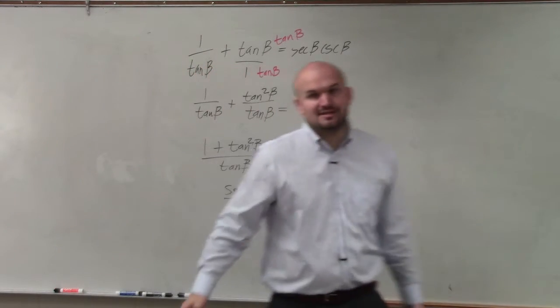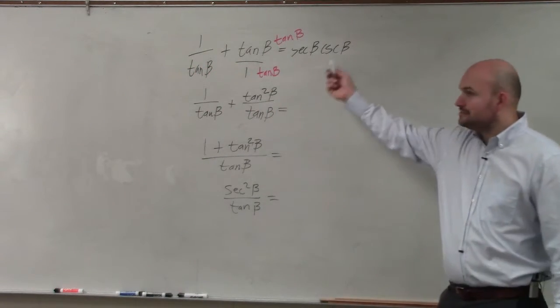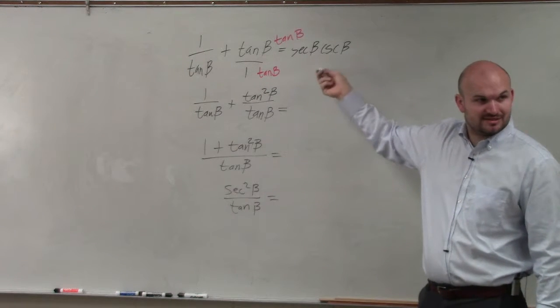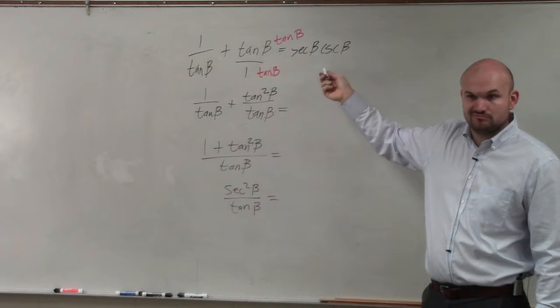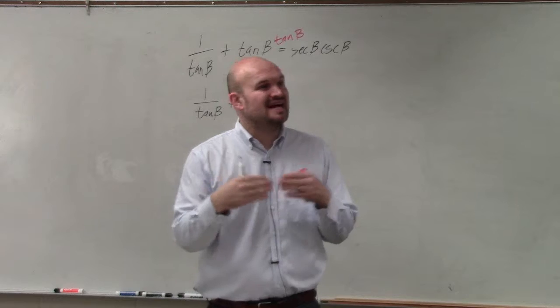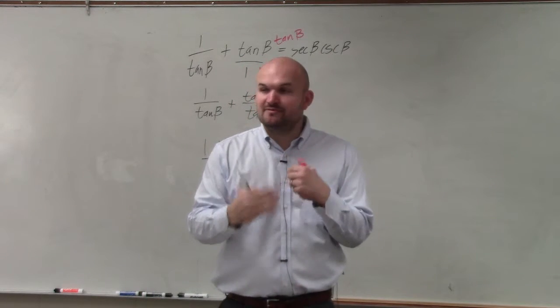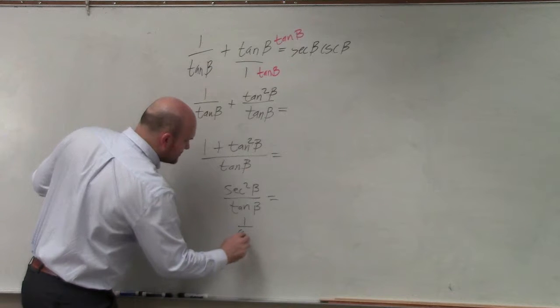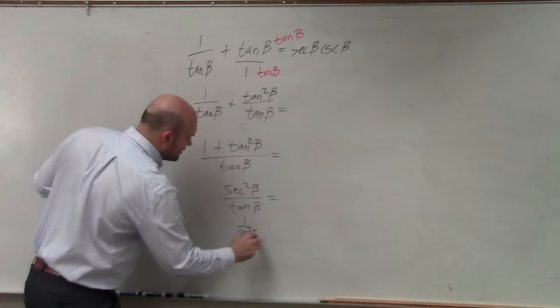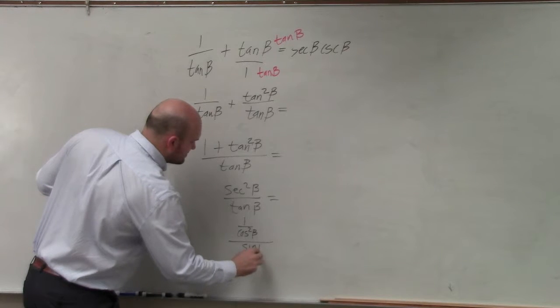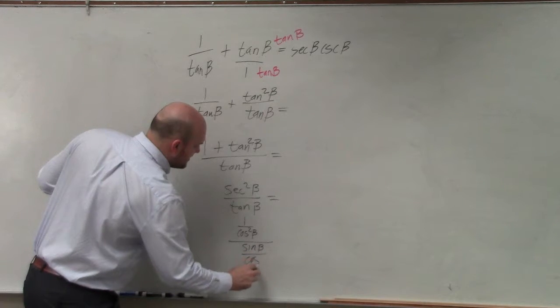Now, do we have this? No. So what might be helpful is to maybe rewrite this in terms of sines and cosines so I can maybe further simplify this. So secant squared is 1 over cosine squared, divided by sine of beta over cosine of beta.